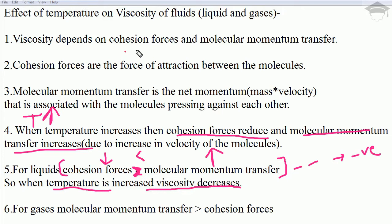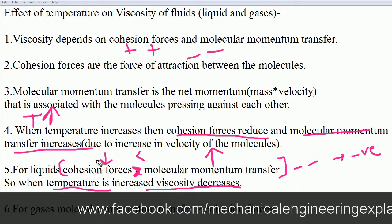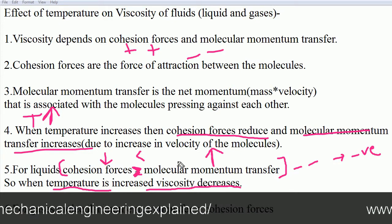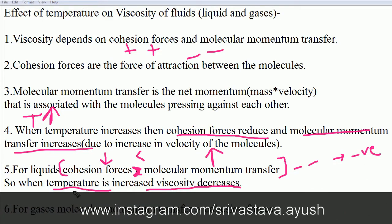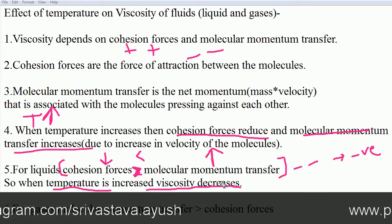In summary for liquids: the cohesive forces were dominant (positive) and molecular momentum transfer was less dominant. When temperature increases, cohesive forces decrease and molecular momentum transfer increases — giving a negative-negative situation. Hence when temperature increases, the viscosity of liquids decreases.